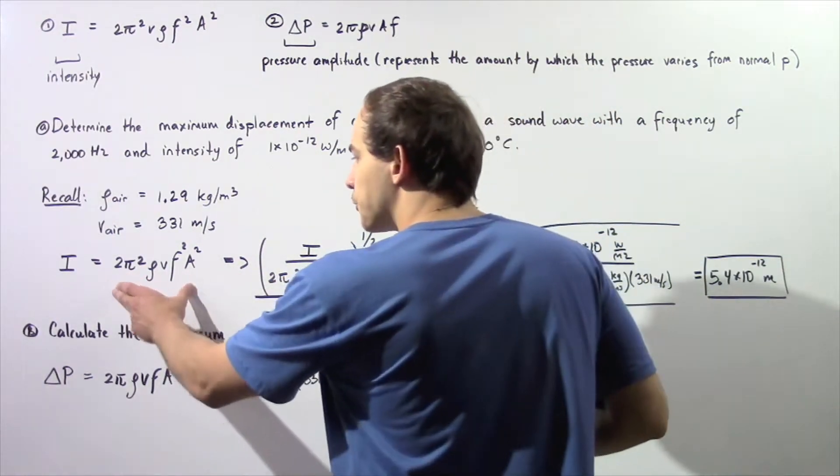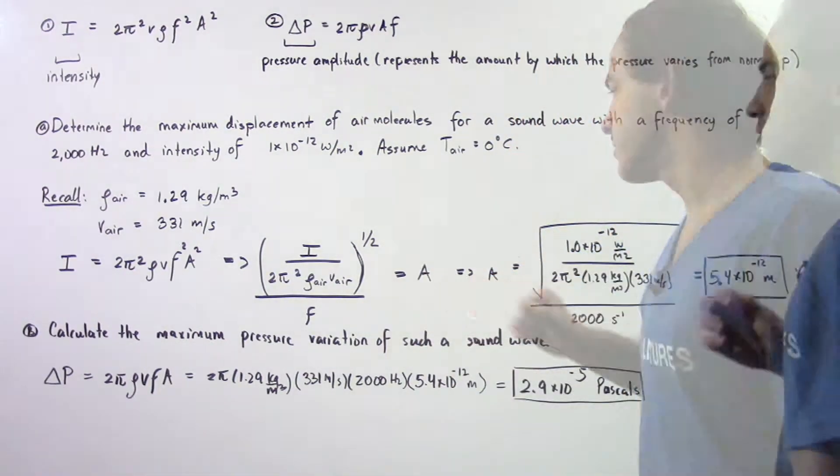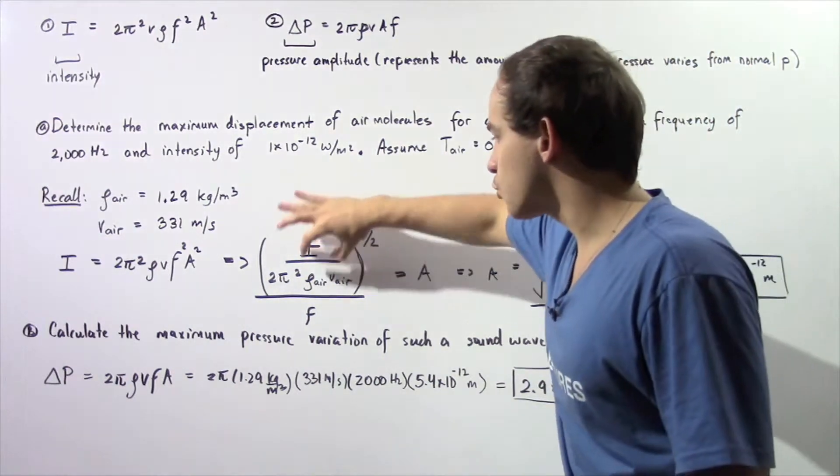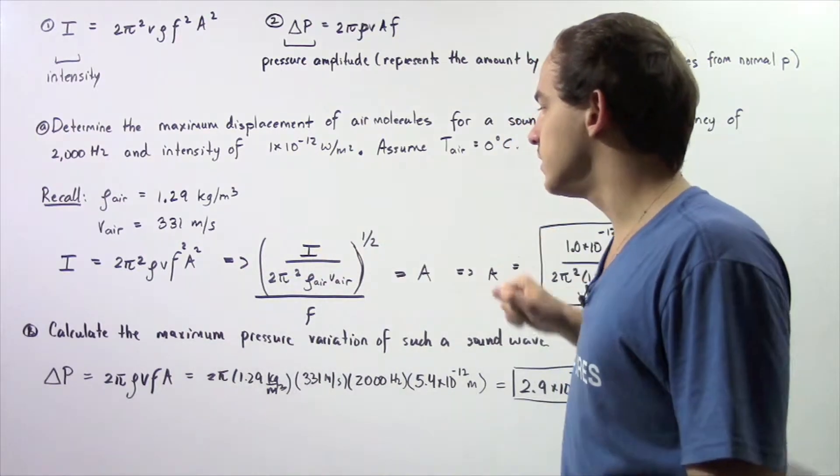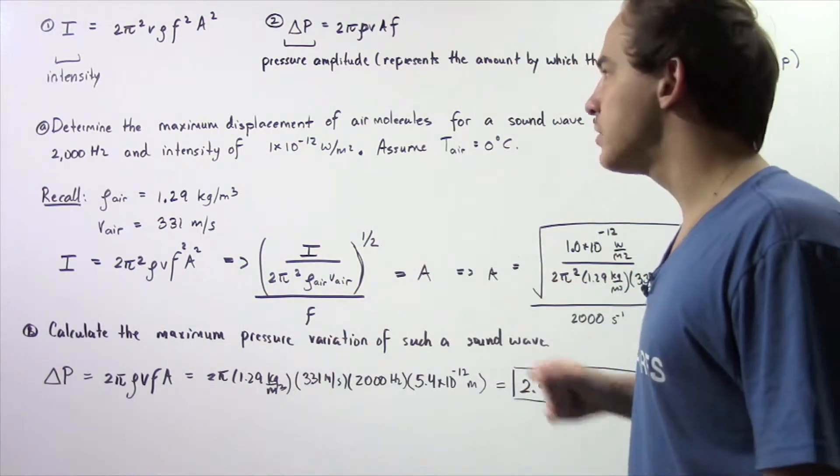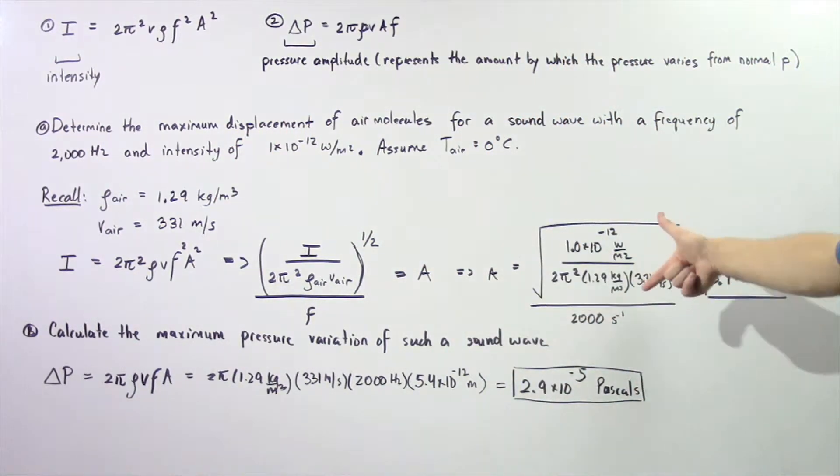We bring all these terms to this side and take the square root to get the following result. If we take the square root of I divided by 2π² times density times the velocity, and divide that by the frequency, we get the amplitude, the maximum displacement. Plugging this into our calculator, we get 5.4×10⁻¹² meters.